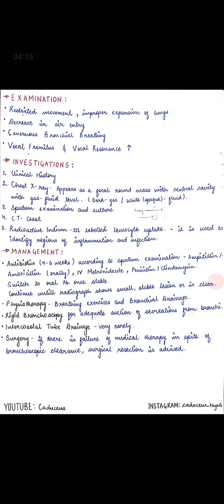Vocal fremitus and vocal resonance are increased in lung abscess cases. To assess vocal fremitus, we ask the patient to repeatedly say words like '99,' '1,' or 'blue balloons.' When the patient says these words repeatedly, vibrations are produced in the body. In vocal fremitus, we do tactile assessment — we assess the vibrations by feeling the chest.